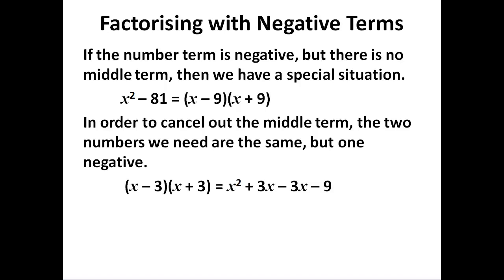When we expand like that, we cancel out. So we get a squared term and a number term and no middle term.